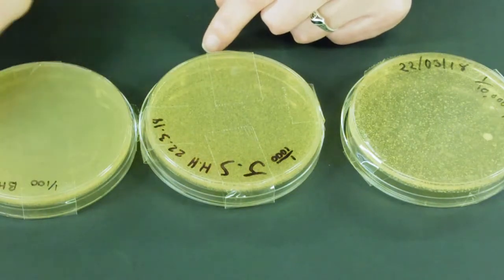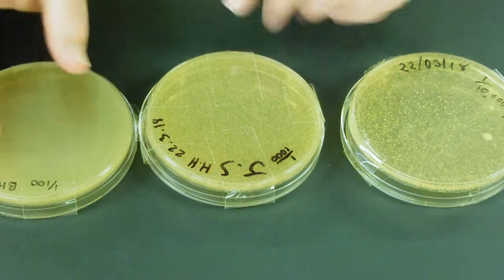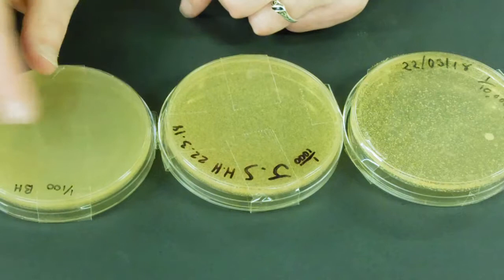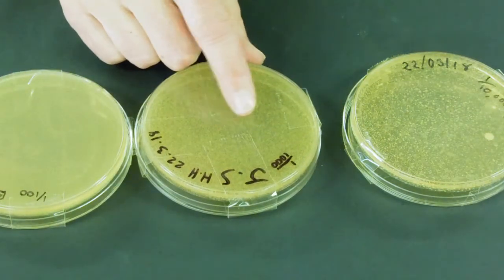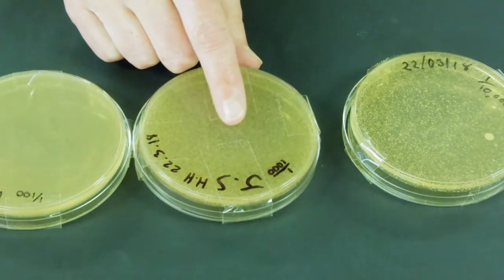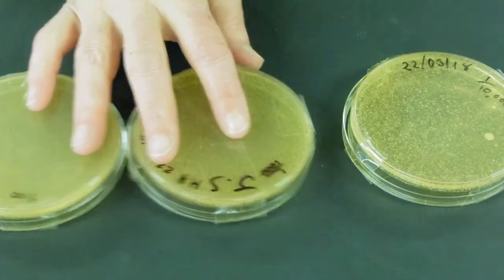So, our one in a hundred, hardly any gaps, still quite a lot of overlap, so we couldn't count this because of the overlapping colonies. Similarly here, our colonies are very close together, some of them are overlapping, we're not going to be able to count those either.